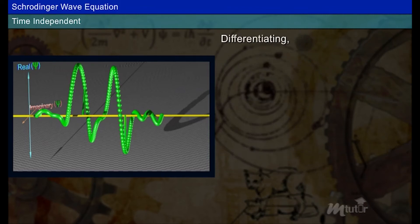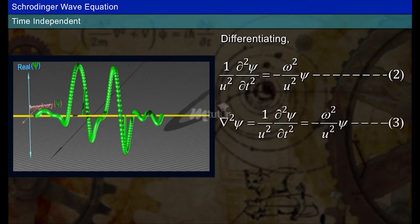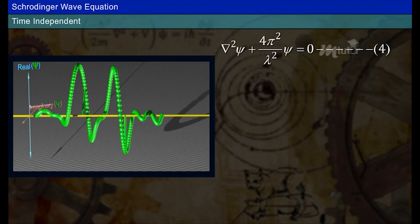Differentiating the above equation, we get 1 by u square into d square psi by dt square is equal to minus omega square by u square into psi. Let it be equation 2. Substitute equation 2 in 1, so the equation is changed as given below. Consider this as equation 3. Omega by u is equal to 2 pi by lambda, where lambda is wavelength. Substitute the omega value in equation 3, we get equation 4.